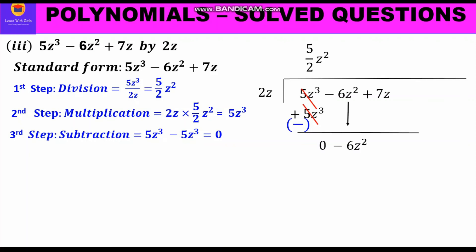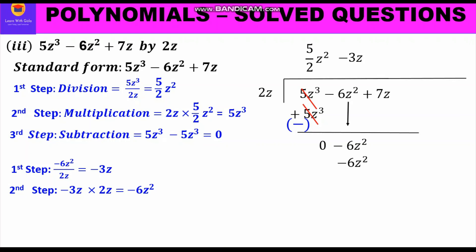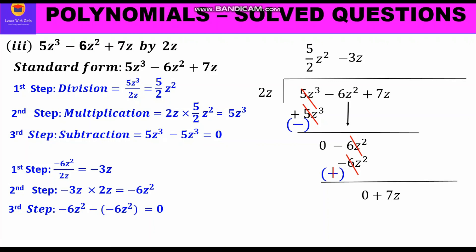We bring down the second term, minus 6z². We go through the three-step approach again. Division: minus 6z² divided by 2z gives minus 3z. Multiplication: 2z times minus 3z gives minus 6z², written below minus 6z² that we brought down. Subtraction: minus and minus become plus — one is negative, one is positive — they cancel and we get 0.